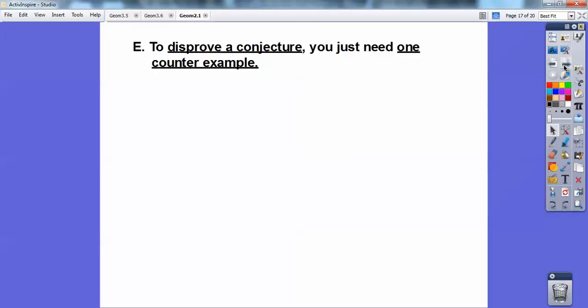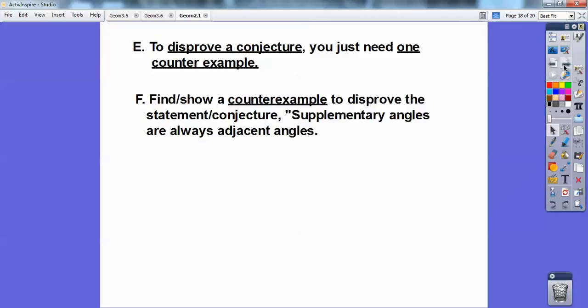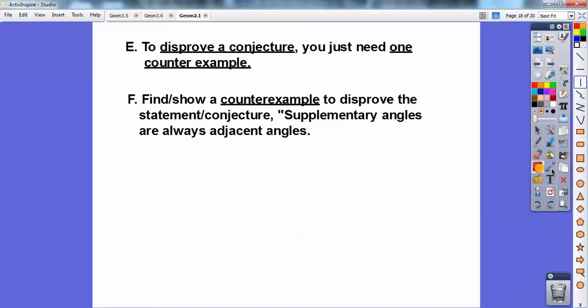All right, so let's see. So to disprove a conjecture, you just need one counterexample. So find and show a counterexample to disprove a statement from the conjecture. So supplementary angles are always adjacent angles. All right, so what I'm going to do is show you some supplementary angles that are adjacent angles. So here's a line right here, and then here's another. There's two angles right there.